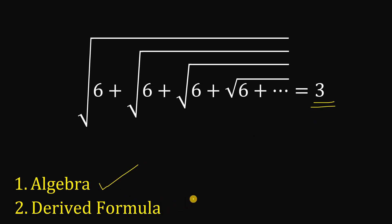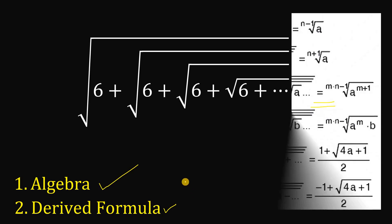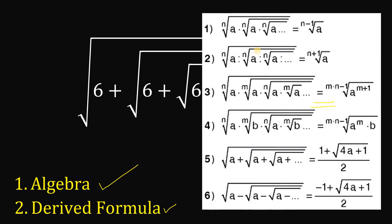Now, how about the derived formula — what we call the shortcut? Here are the derived formulas involving the radical sign. We are interested in formula number 5: the square root of a plus the square root of a plus the square root of a until infinity equals 1 plus the square root of 4a plus 1, all over 2. You can pause here to analyze those derived formulas.